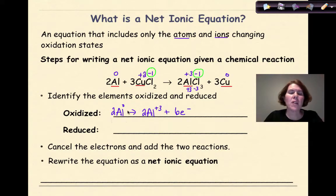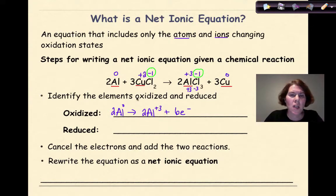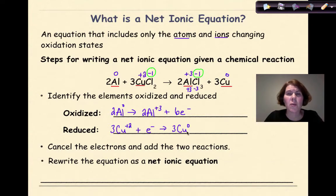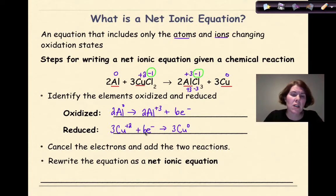Now, if the aluminum atom is undergoing oxidation, that means the copper ion must be undergoing reduction and gaining electrons. I'm going to bring the coefficient with me: three Cu plus two, gaining some number of electrons, will yield three Cu zero. Each copper ion needs to gain two electrons to become a copper atom, and there's three copper ions here. So three times two means that I'm going to be gaining six electrons.